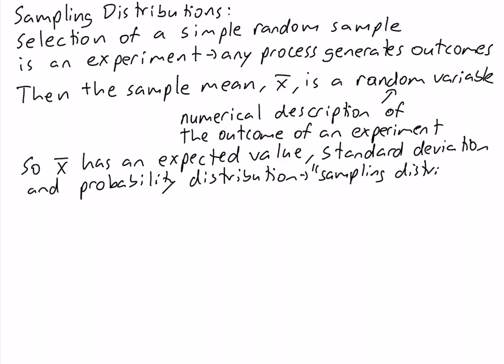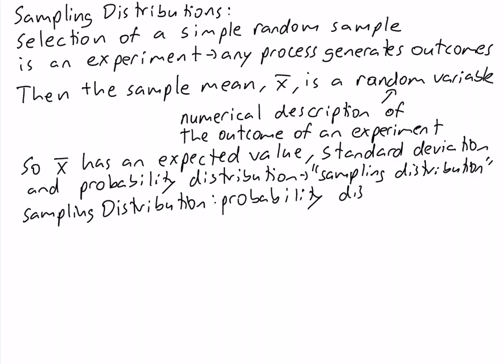The probability distribution of our sample mean we refer to as a sampling distribution. A sampling distribution is simply the probability distribution of a sample statistic, such as the sample mean. We use the term sampling distribution because this probability distribution arises from the process of sampling.